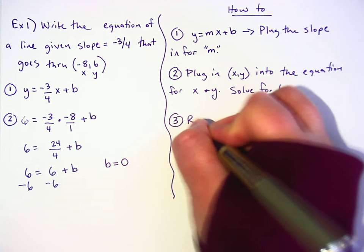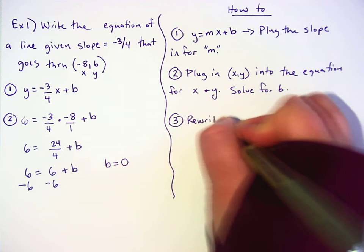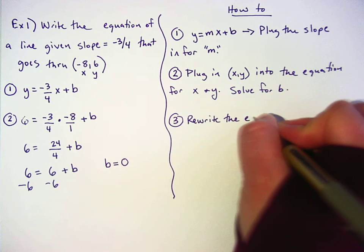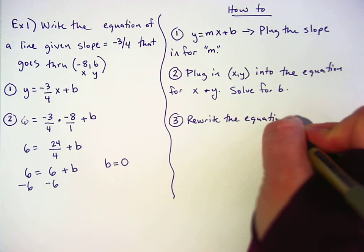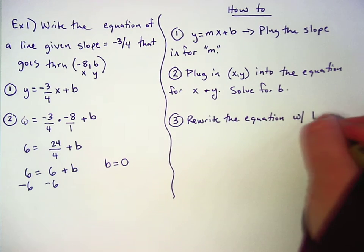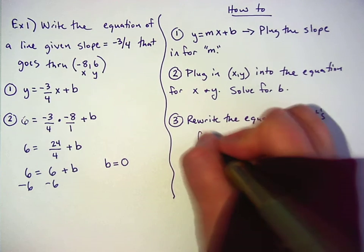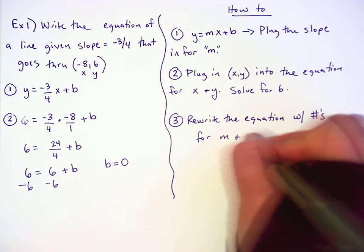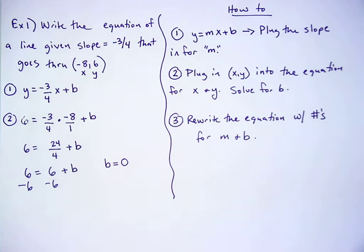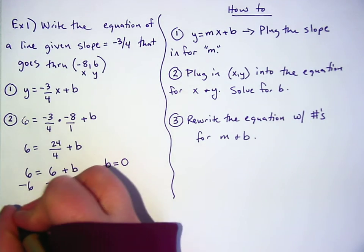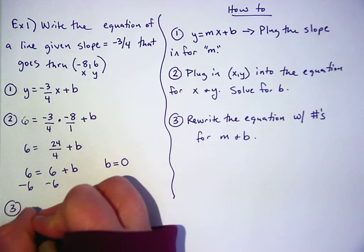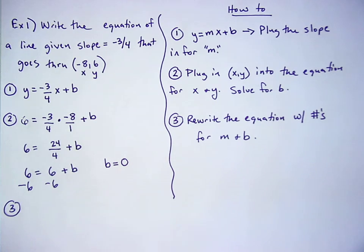And then the final step is to rewrite the equation with numbers for m and b. That's the final step. Yep. I don't get where does, did you get the six from again?